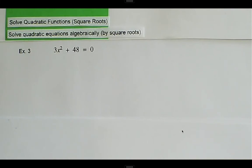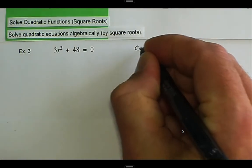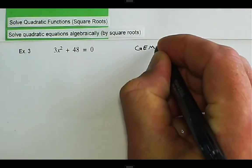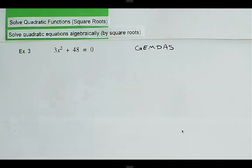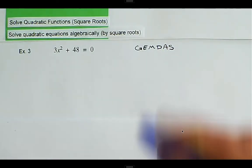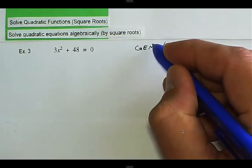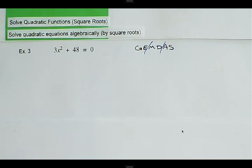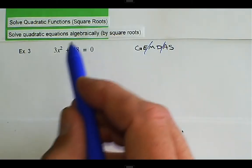About solving quadratic functions using the square root, and here we have another example. We want to use GEMDAS and get x by itself. Whenever we use GEMDAS, we always start with addition or subtraction, then go to multiplication or division, and then go to exponents and groups after that.